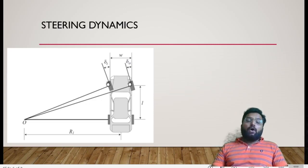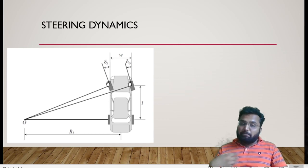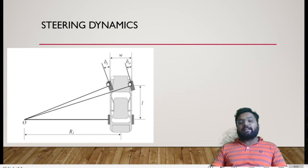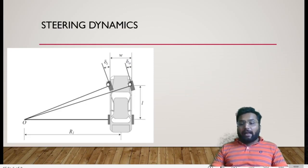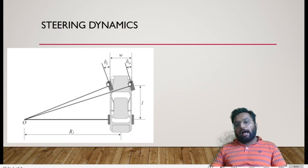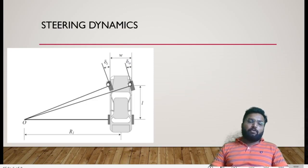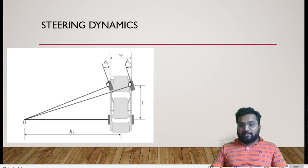While designing the steering system, our first criteria is to decide the steering dynamics even before deciding the mechanism — whether it is manual or power, mechanical or rack and pinion. We decide steering dynamics by the help of the Davis or Ackerman method. In the next video, we are going to discuss the different types of steering systems and afterward we will decide the steering dynamics of the steering system.